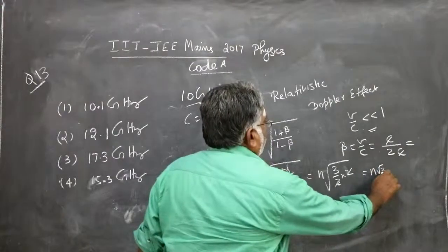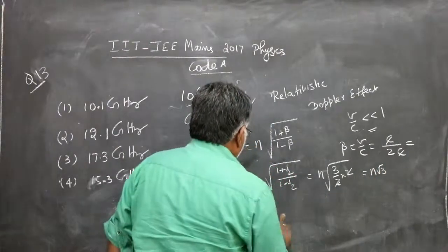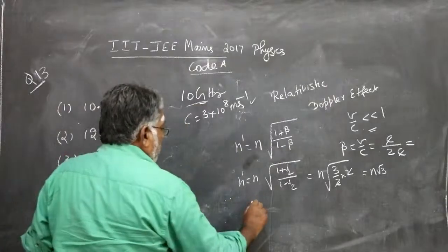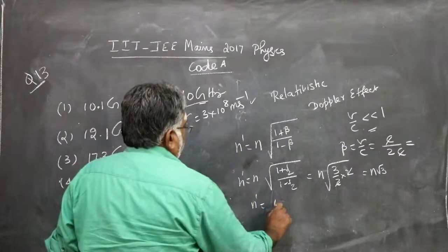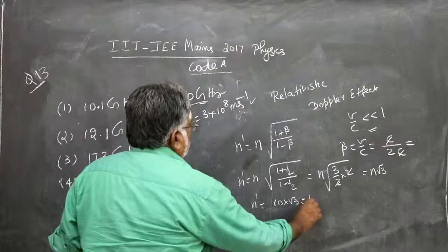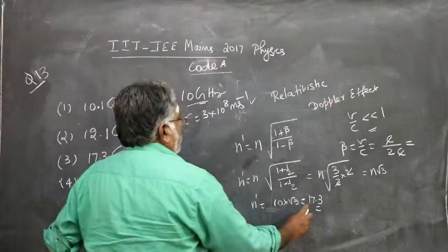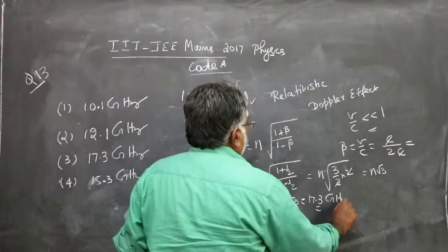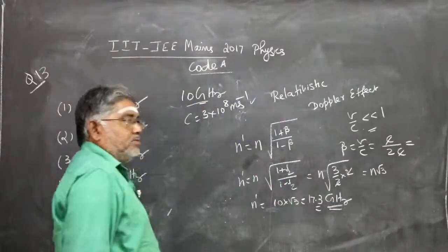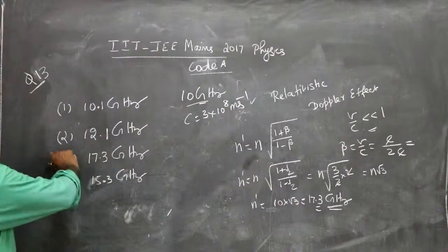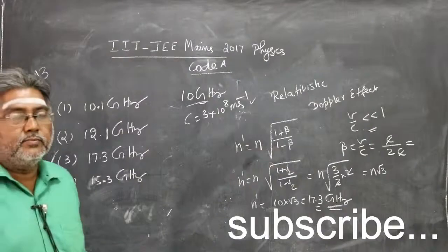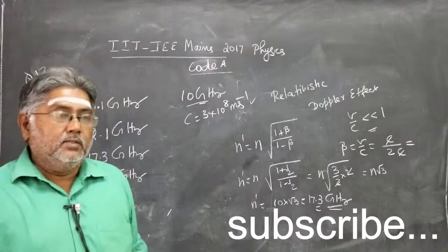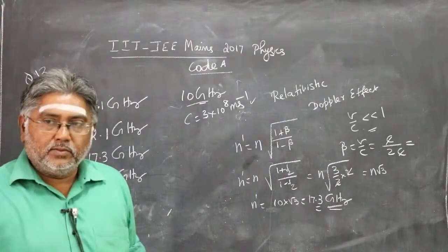n × √3, where n is given as 10 GHz, so 10√3 = 17.3 GHz is the answer. Option 3. Thank you.